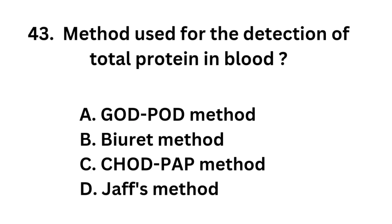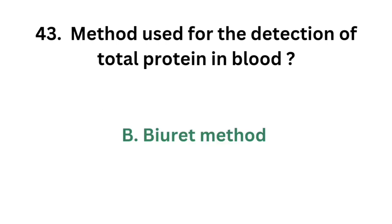Question number 43: Method used for the detection of total protein in blood. Option A: GOD-POD method. Option B: Biuret method. Option C: CHOD-PAP method. Option D: JAFFE method. The correct answer is option B: Biuret method. Biuret method is the test used to detect total protein in blood.